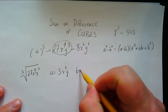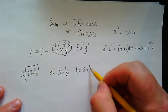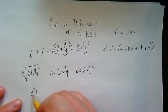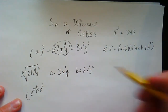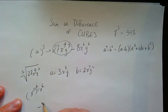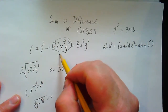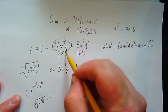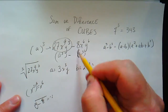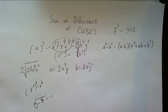Now b is 2x squared y squared, because when you cube x squared you get x to the sixth. Now let's talk about the sign. It's true that if you take negative 8 and take the cube root you get negative 2, but here's the thing — this is a cubed minus b cubed, so we're going to consider this number as positive and treat the negative sign as an operation between the two terms.